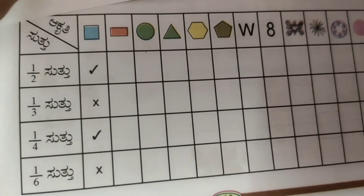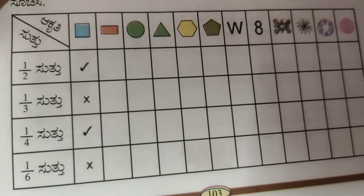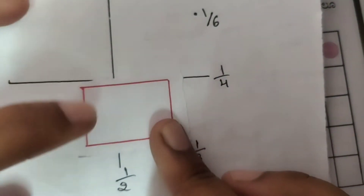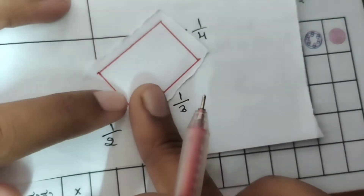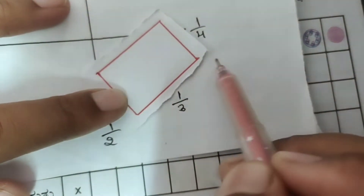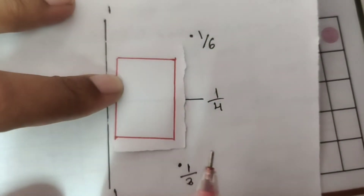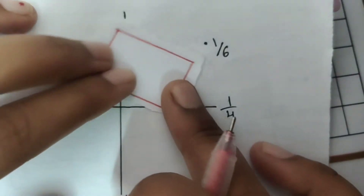1 by 6 — this is not the original shape. Checking further: this is not the original shape. So 1 by 4 is not the original shape — wrong.